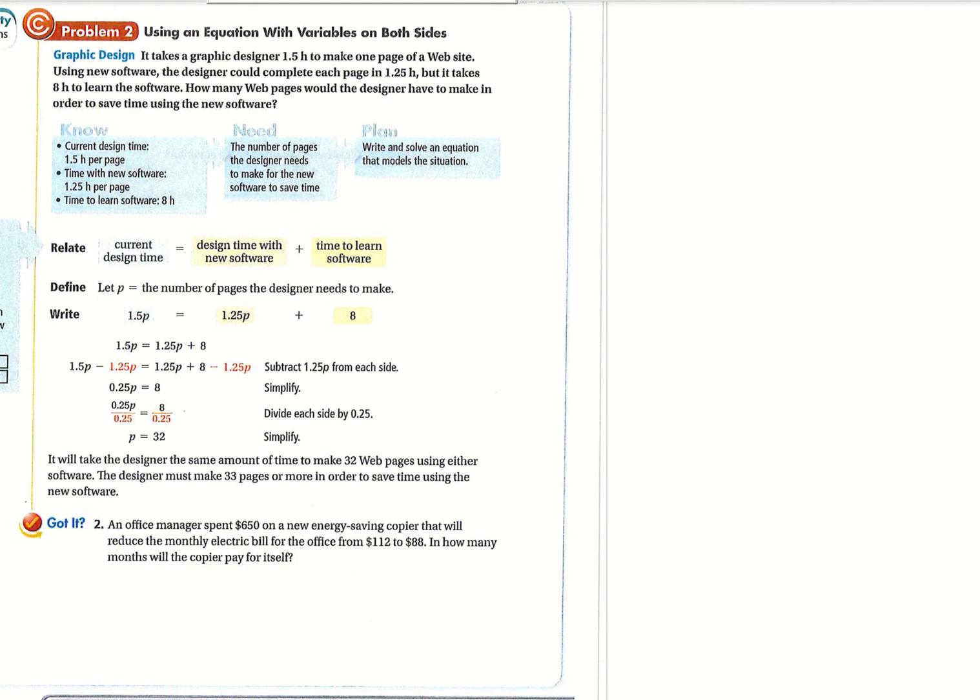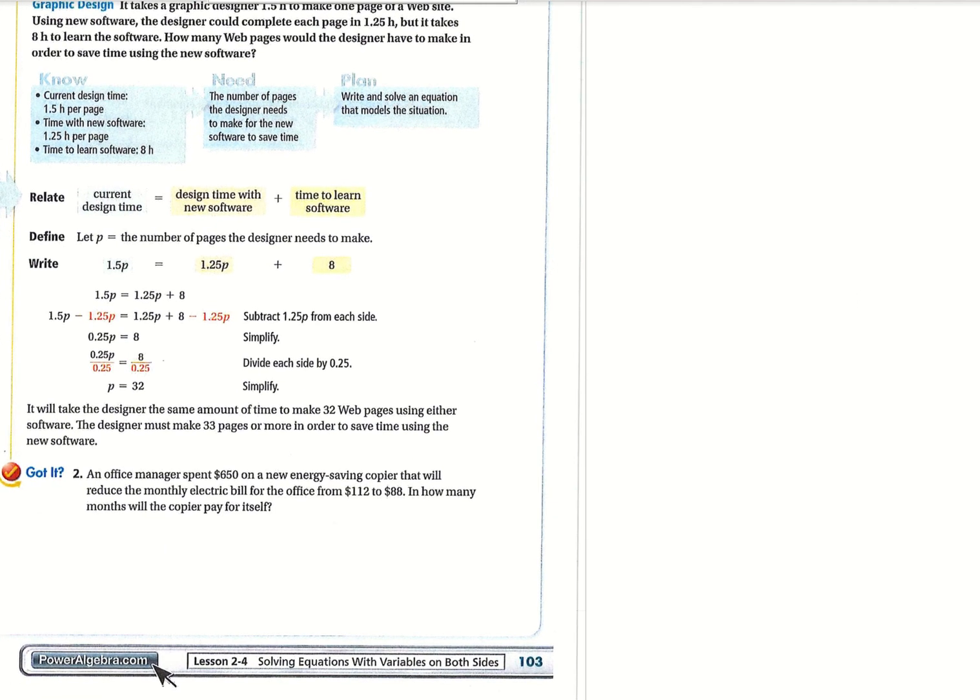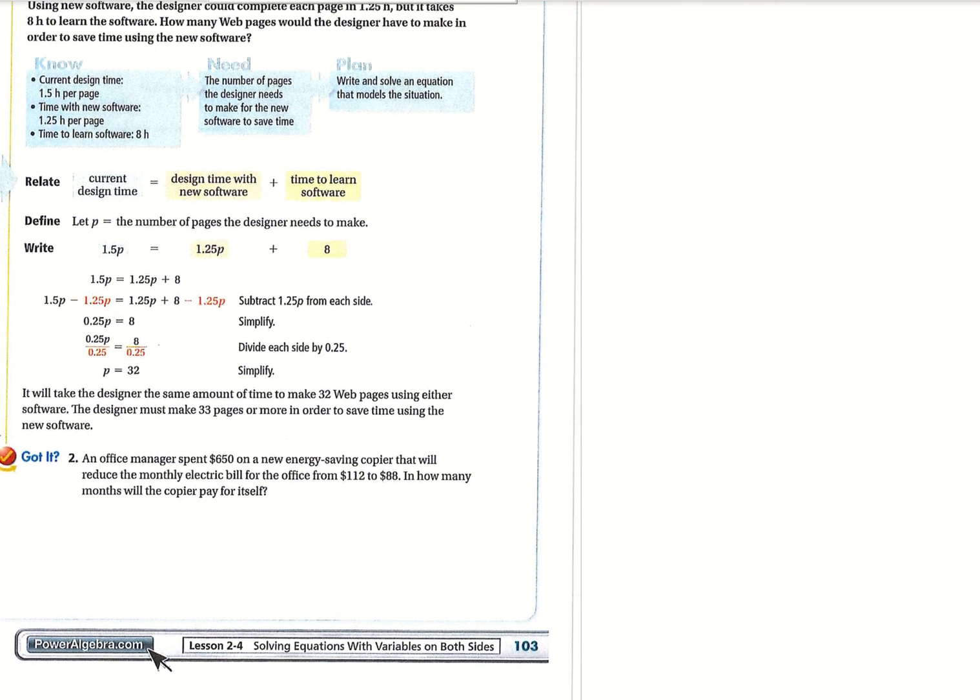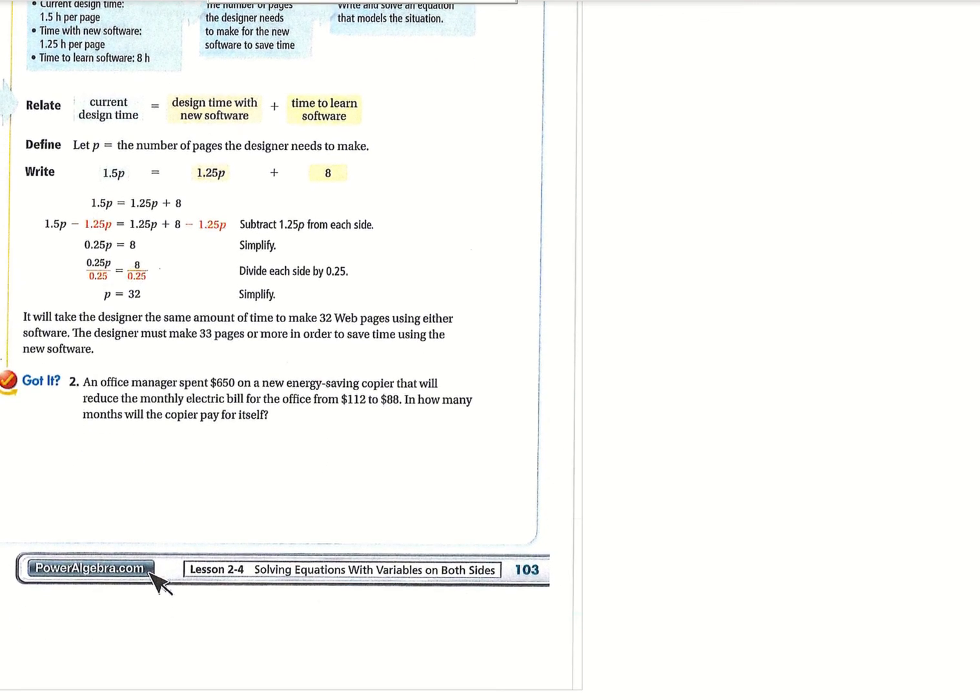All right, so we are going to want to come up with an equation here. They've come up with p equals the number of pages the designer needs to make. We're looking for where the 2 times are equal. So on one side, you have 1.5 hours per page, which is represented by 1.5 times p.